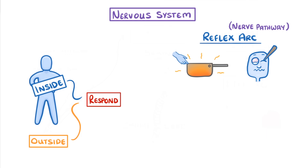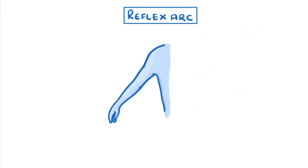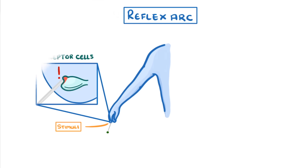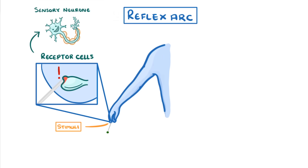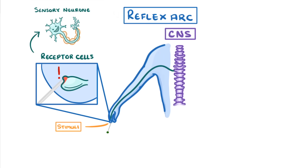The benefit of having these reflexes is that they're rapid and automatic, so we can respond to things really quickly, which helps us to avoid getting hurt. As an example, let's imagine you reach out and accidentally touch the end of a pin. We can call the pressure of this sharp object a stimulus, and it will be detected by receptor cells in your skin. This will then stimulate a sensory neuron that will carry an impulse from your finger up to the spinal cord, which is part of the central nervous system.